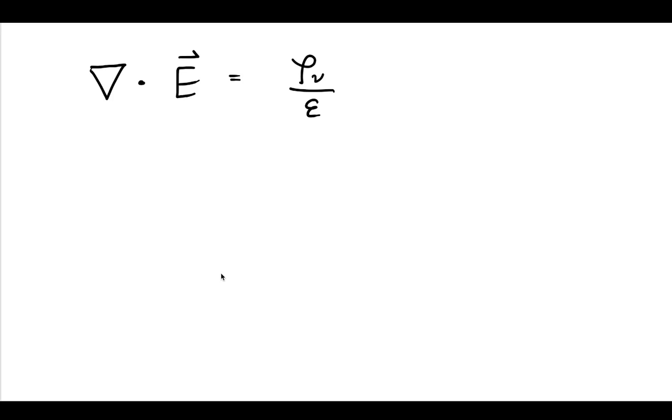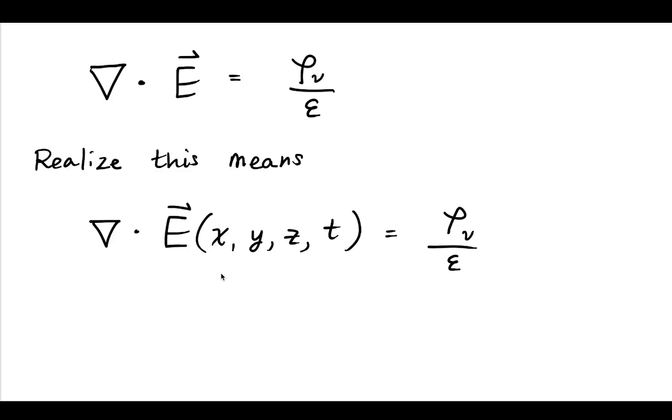Now, if we want to convert this into phasor form, realize that that just means that this left-hand side contains all of the electric field components in space plus that component in time. And if we anticipate that our magnetic field and so on is going to have that same omega t variation,